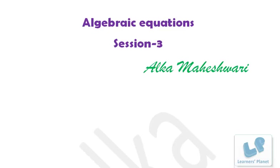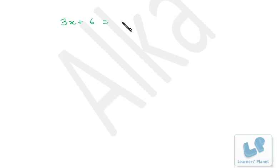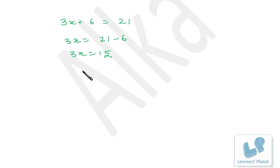Suppose we have an equation: 3x plus 6 is equal to 21. So 3x is equal to 21 minus 6, which gives 3x equals 15, and x is equal to 15 divided by 3. This is the method we discussed in the previous session.